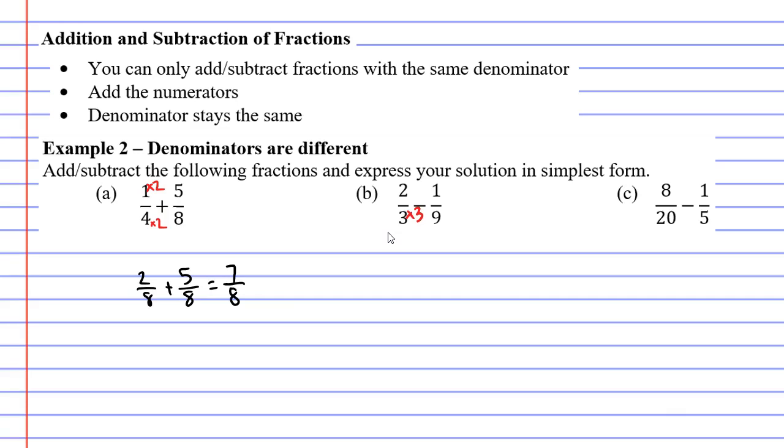The rule being that if I multiply the bottom by three I've got to multiply the top by the same number. So we get two times three is six and three times three is nine for our first fraction and our second fraction stays the same as one over nine. Now our denominators are the same I know that my solution will have a denominator of nine and six minus one gives me five for the numerator.